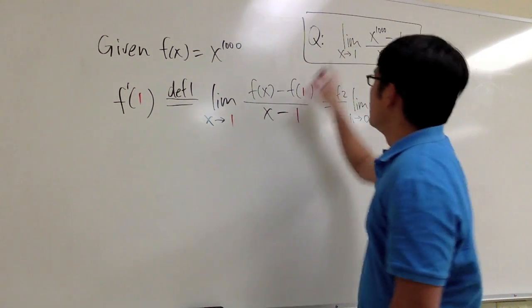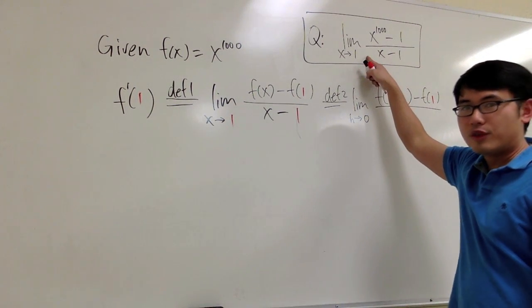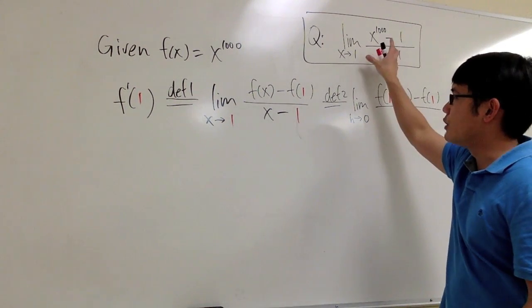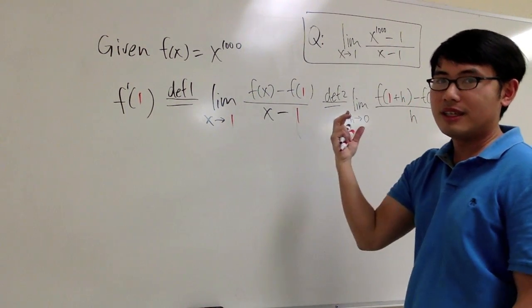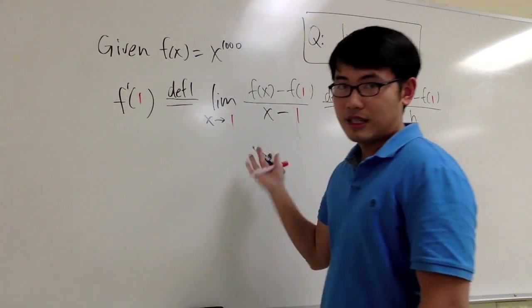That's why, notice that this limit is secretly just a derivative equation, so you change this equation to a derivative equation, and I can use the power rule for that. And that's it.